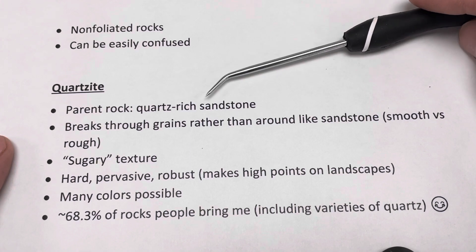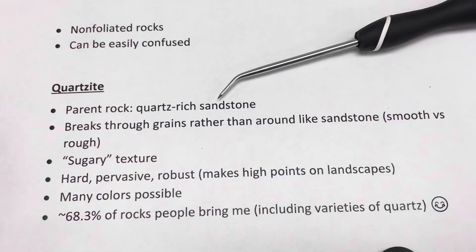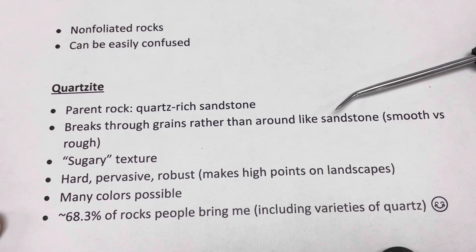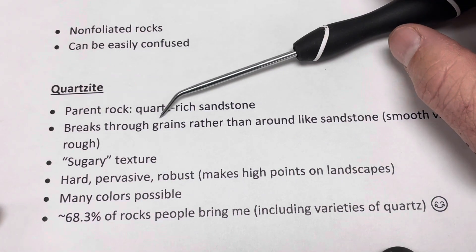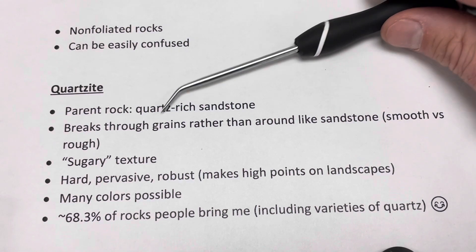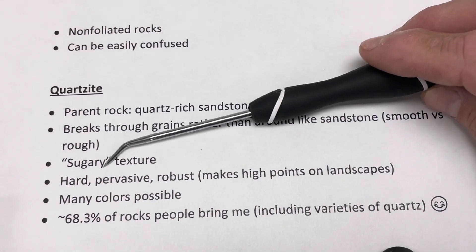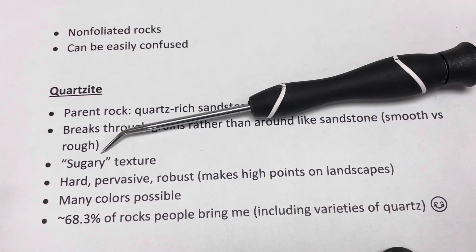The parent rock of quartzite is a sandstone dominated by quartz. If you take a quartz-dominated sandstone and subject it to elevated temperatures and pressures, the quartz grains will actually fuse together and produce a quartzite with a different texture than sandstone. You can tell them apart by how they break: sandstone feels gritty because it fractures around individual sand grains, whereas in quartzite those grains are so completely fused that it breaks right through them, producing a much smoother texture. I like to call that texture 'sugary.'